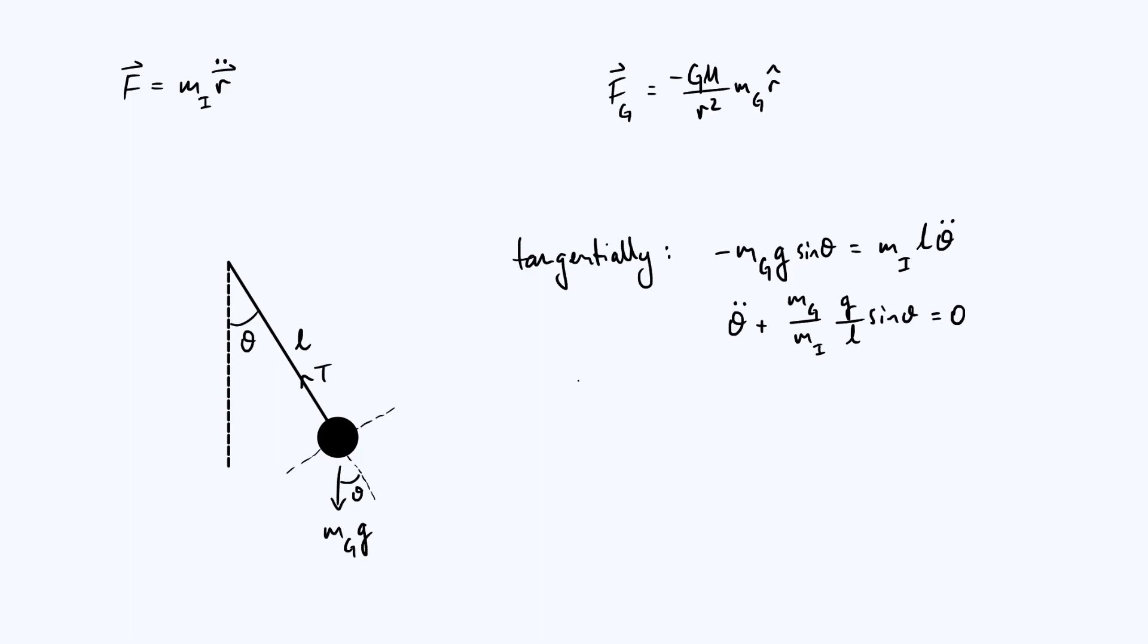We make the usual assumption that we're dealing with small angles. If theta is much less than one in radians, then sine of theta is roughly the same as theta itself. Then you have the acceleration plus a constant times the angular displacement theta equals zero. That is the equation for simple harmonic motion. We get simple harmonic motion regardless of whether the inertial and gravitational masses are the same.